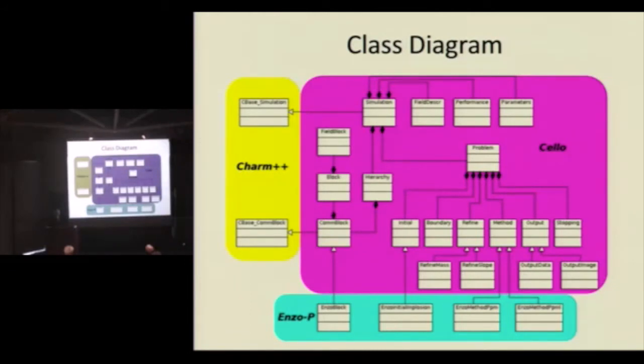And an application developer only needs to work here. All of this stuff is basically exposed through an API, a Cello API, that does everything else. Now, I would have to say, let me just dive in a little bit right here. So, field block is all the field data that you need for the problem that you care about. In the case of hydrodynamics, it's density, energy, three components of velocity, maybe a few other things.